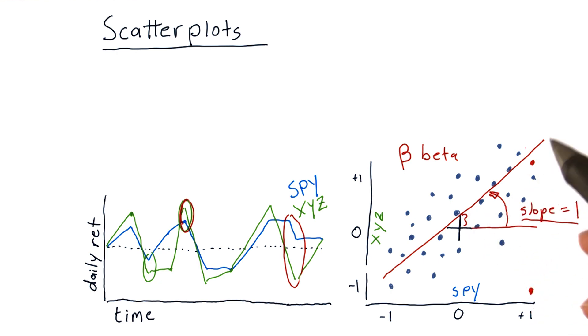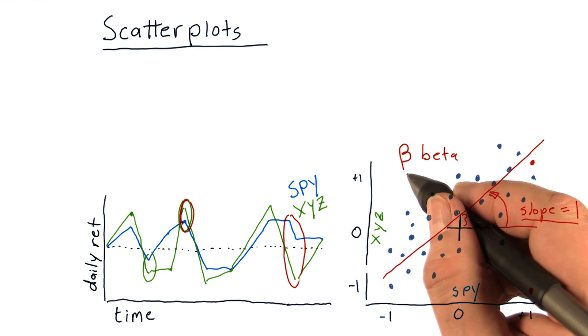There's another factor you can see here when you look at where that line intercepts the vertical axis. That is called alpha.